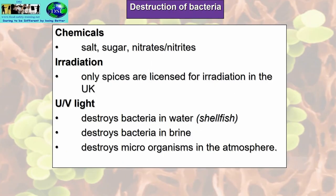We can use chemicals to kill bacteria — salt, sugar, nitrates, nitrites, for example. Salt and sugar draw moisture out of foods, making it less desirable for pathogens to grow. Nitrates and nitrites act as chemical preservatives so bacteria won't grow. Irradiation is used throughout several continents, but only spices are licensed for irradiation in the UK. Ultraviolet light is used in several industries, especially the shellfish industry — it destroys bacteria in water, in brine, and microorganisms in the atmosphere.